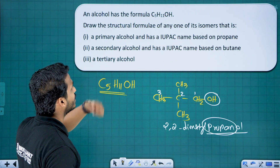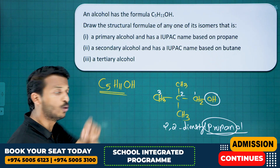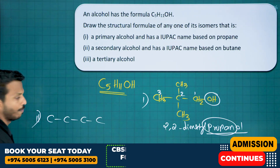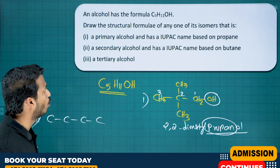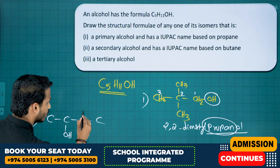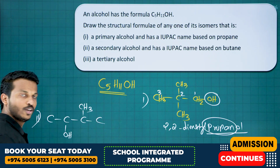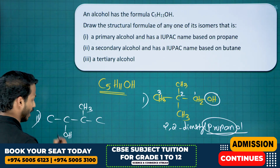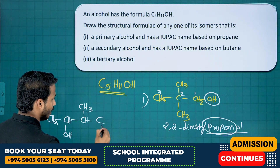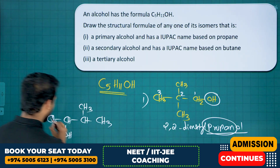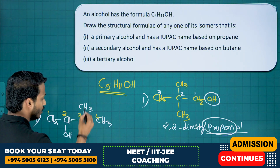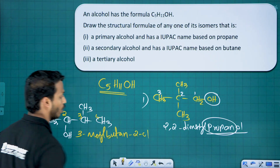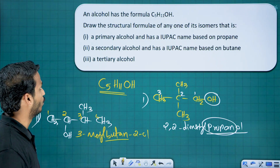Second part: a secondary alcohol with IUPAC name based on butane. Butane means four carbons in the main chain. Place OH so the connected carbon touches two carbons: CH3CH(OH)CH(CH3)CH3 — the OH-connected carbon is connected to two carbons, so it is secondary. The parent chain has four carbons. IUPAC name: 3-methylbutan-2-ol.